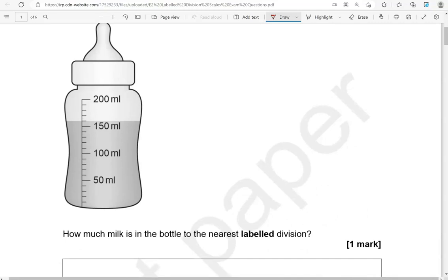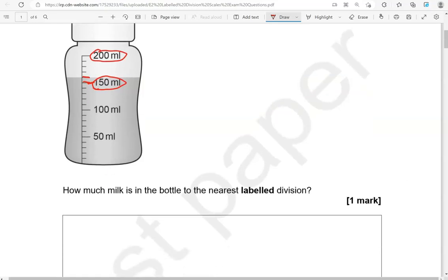Labeled divisions are these divisions where we've got the numbers for them, like 150, 200, 100, or 50. Now this sits in between 150 and 200 and it's closer to 150 than to 200. That's why we're going to say 150 milliliters.